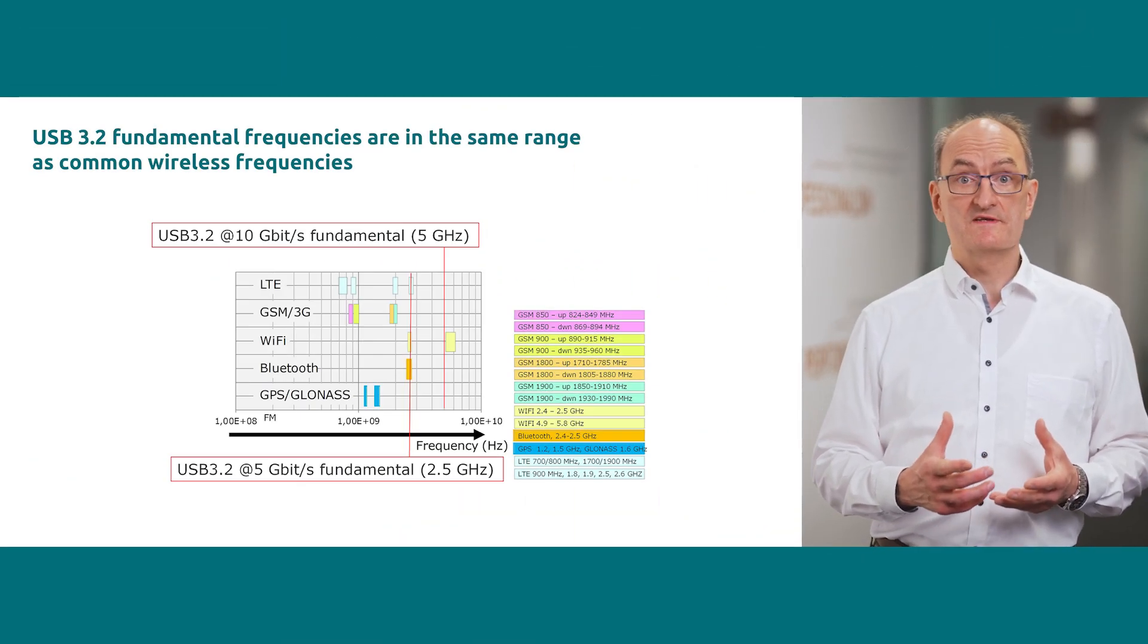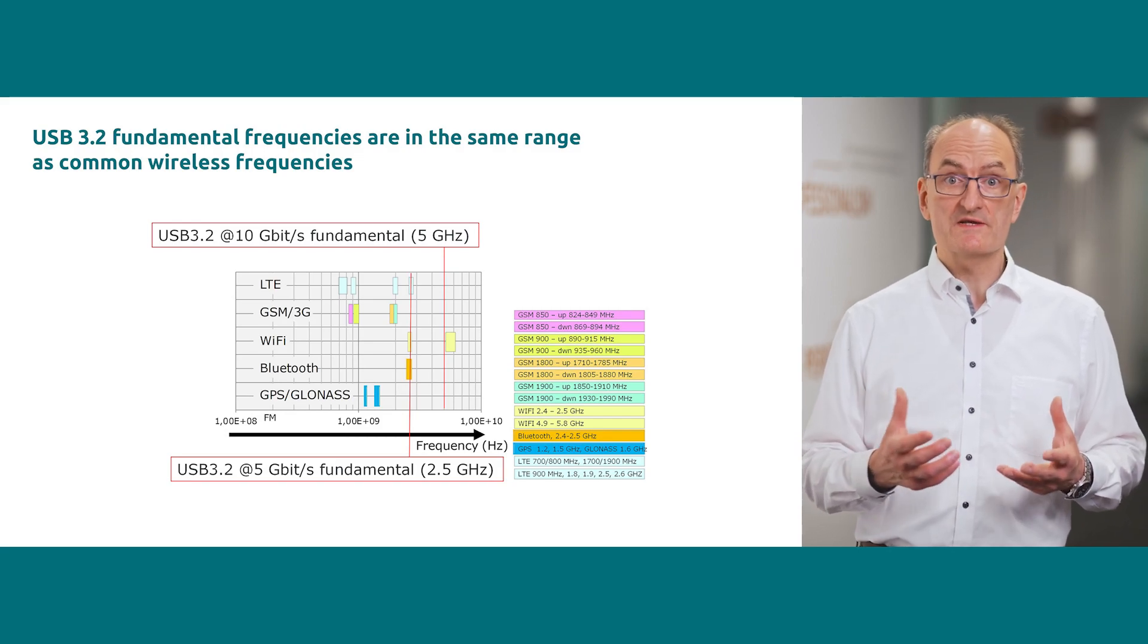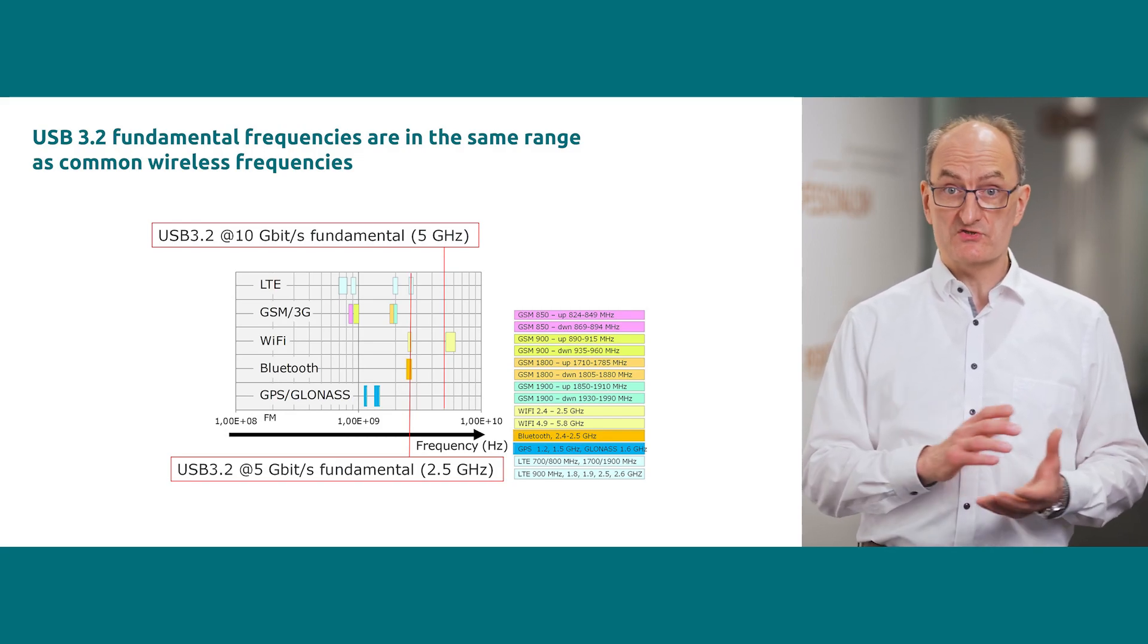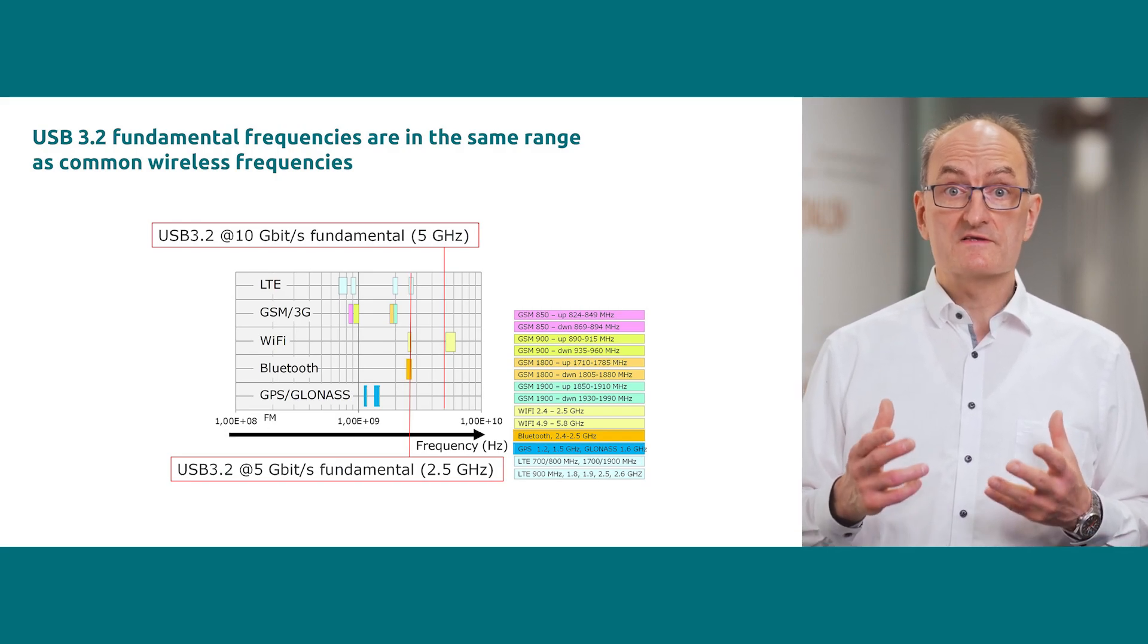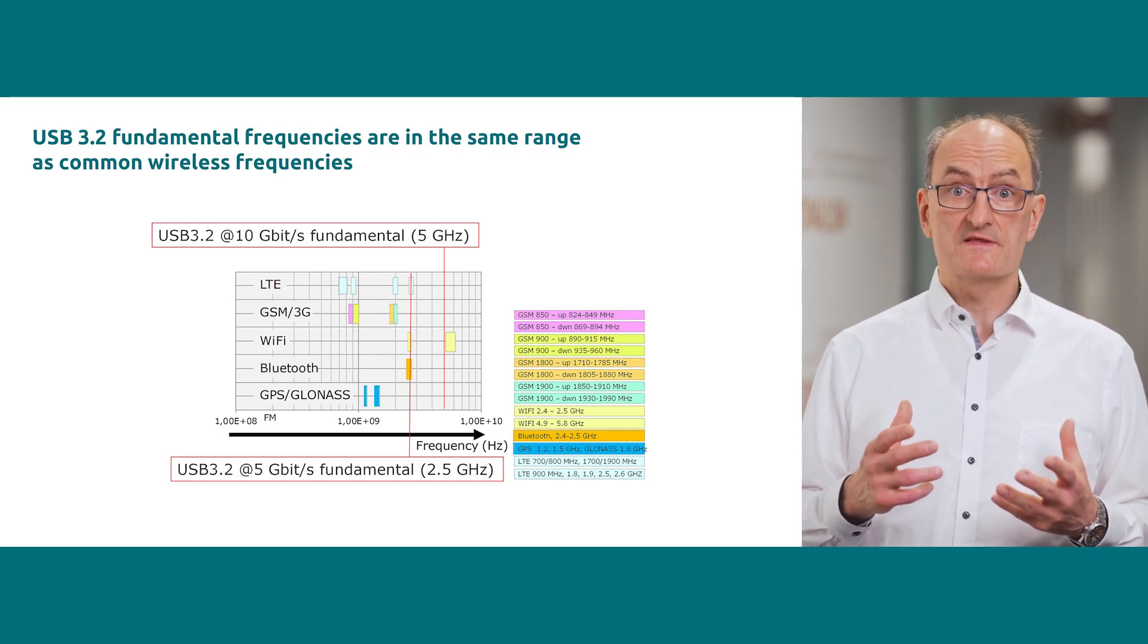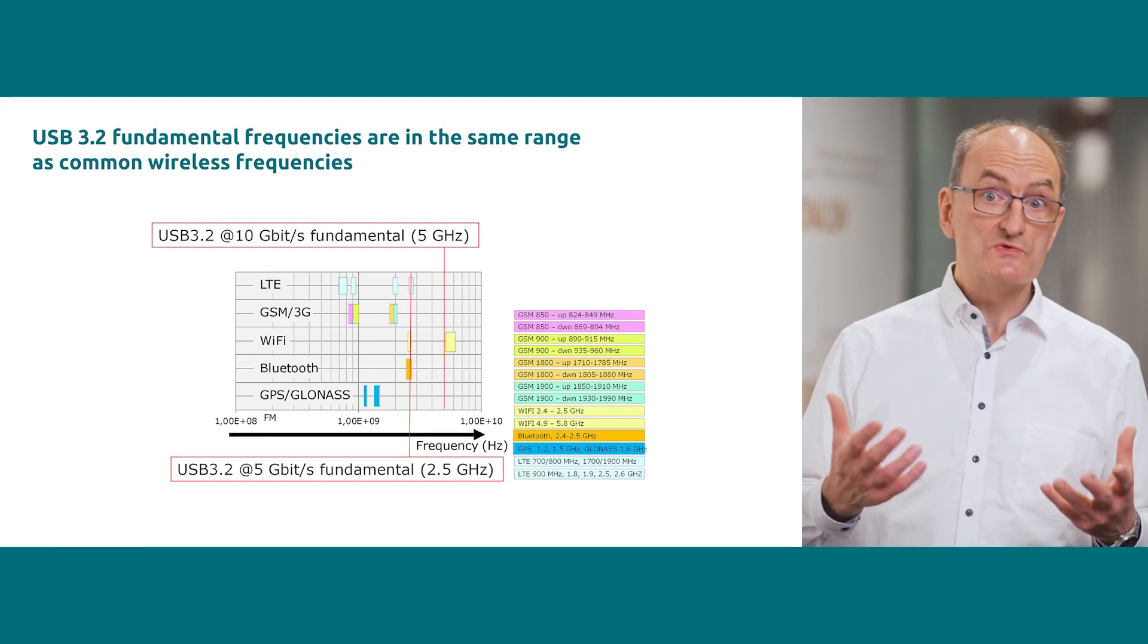Applying common mode filters in differential data lines is a well-known method to avoid electromagnetic interference in high-speed applications. USB 3 data lines, for example, have their signal fundamental frequencies in the same frequency range as wireless signals such as Bluetooth and Wi-Fi.